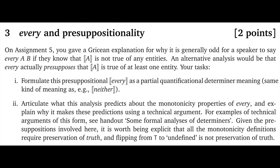On to question three: 'every' and presuppositionality, worth two points. On assignment five, you gave a Gricean explanation for why it's generally odd for a speaker to say 'every A B' if they know that A is not true of any entities. An alternative analysis would be that 'every' actually presupposes that A is true of at least one entity. That's the background — read it carefully.